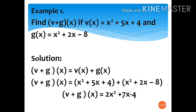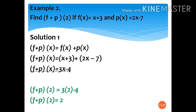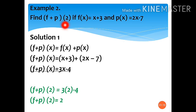So the final answer of (v + g)(x) = 2x² + 7x − 4. Let us find more examples, example number 2: find (f + p)(2), where f(x) = x + 3 and p(x) = 2x − 7. As you can see, we have here the value of x. This is what we call evaluating the sum of a function — we do not stop at just adding functions, we have to evaluate it.